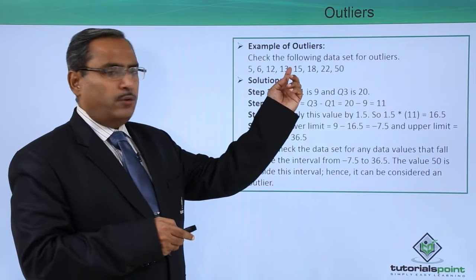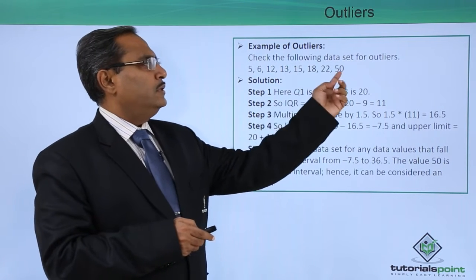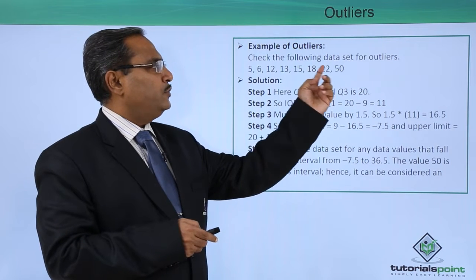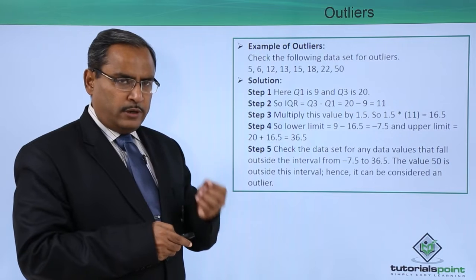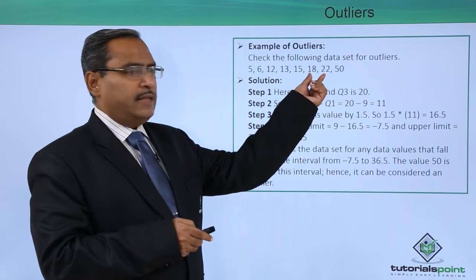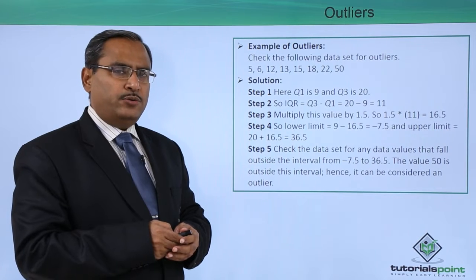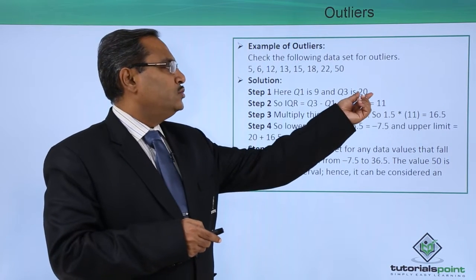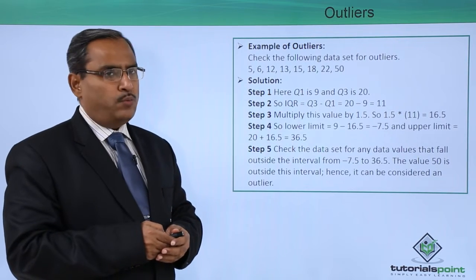As we know that 14 is the second quartile, the median, here above this particular 14 we are having four data, an even number of data. To calculate Q3, I must be getting the average of 18 and 22. 18 plus 22 divided by 2, I shall be getting 20. So 20 is our Q3 and 9 is our Q1.